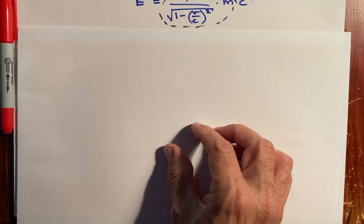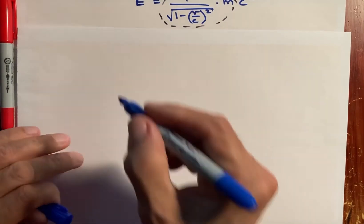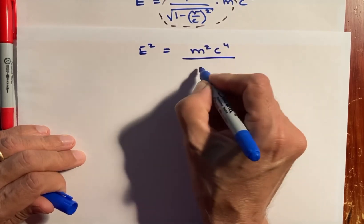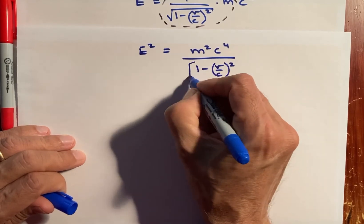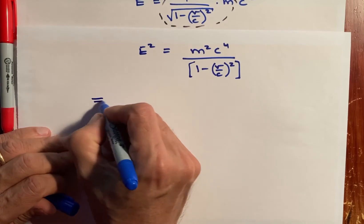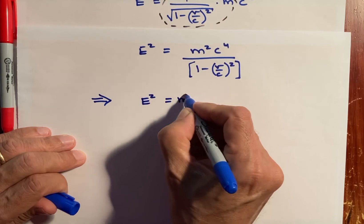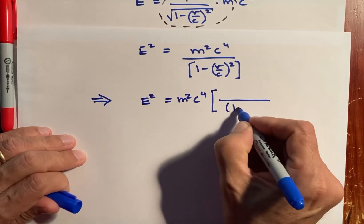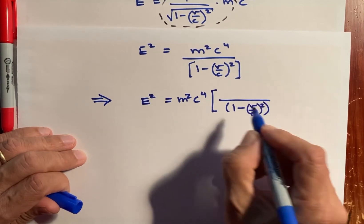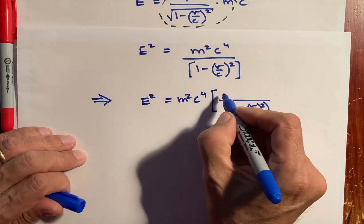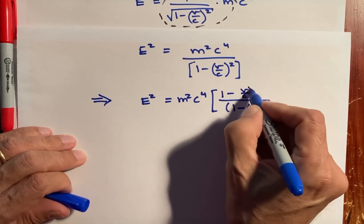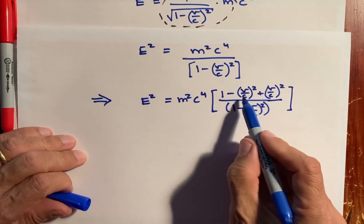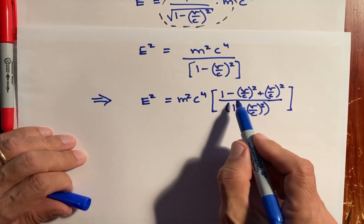If we now go ahead and square both sides of the equation, the denominator becomes (1 − (v/c)²). For the numerator, we write it in an interesting and unique way — essentially subtracting a term and adding it right back again, so it is still the same expression.